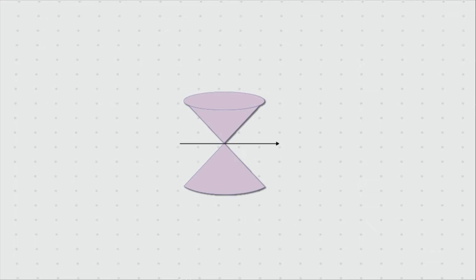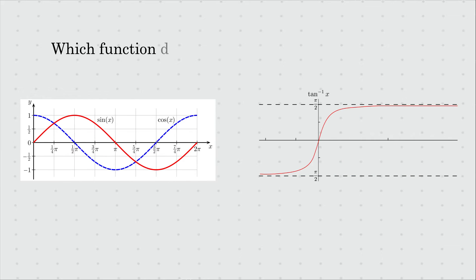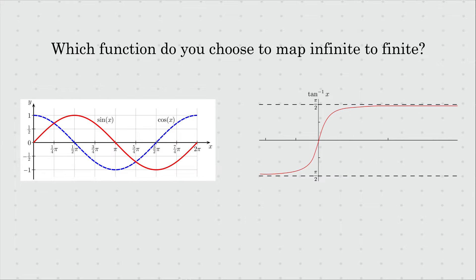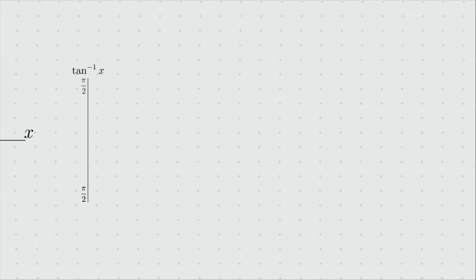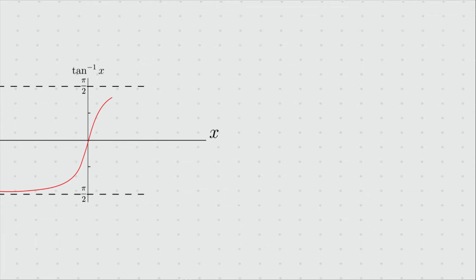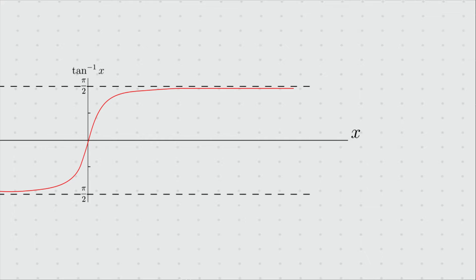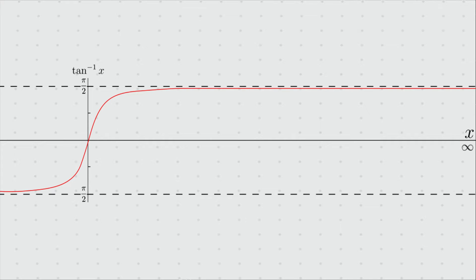The space-time is infinite on the x-axis and time-axis. What might be the way to map these infinite coordinates to finite ones? The tan function looks particularly appealing. All the values of x from minus infinity to plus infinity are mapped into a finite range of minus π/2 to π/2. This is exactly the trick that Penrose diagrams use to bring infinite space and infinite time to the finite two-dimensional plane.